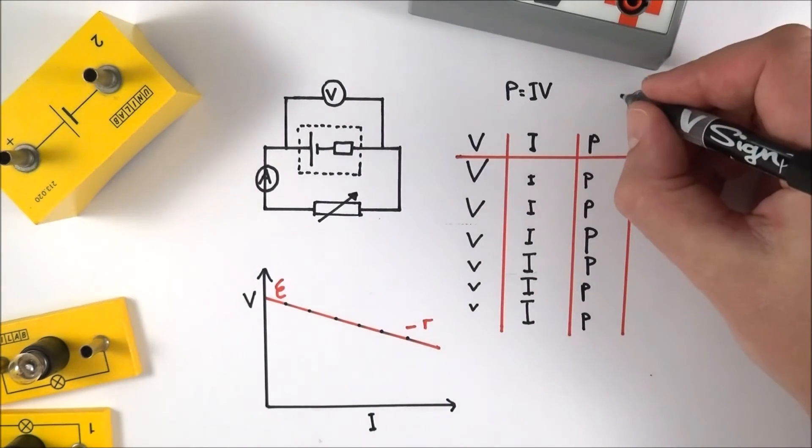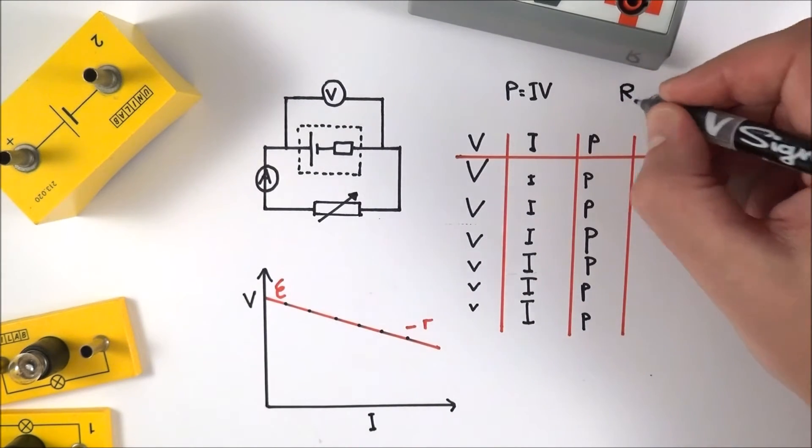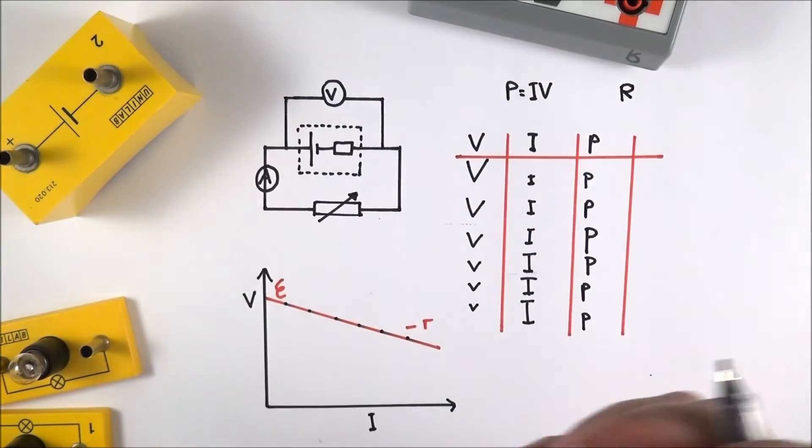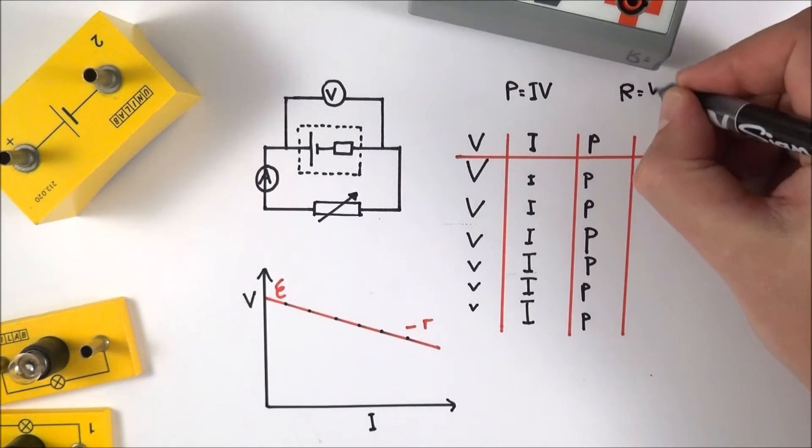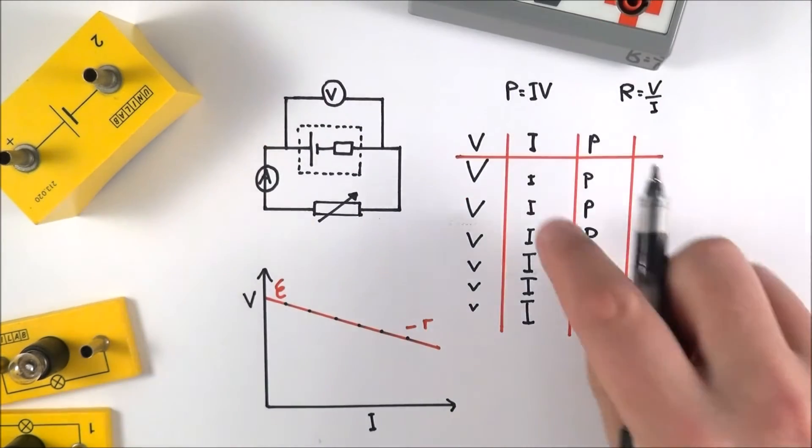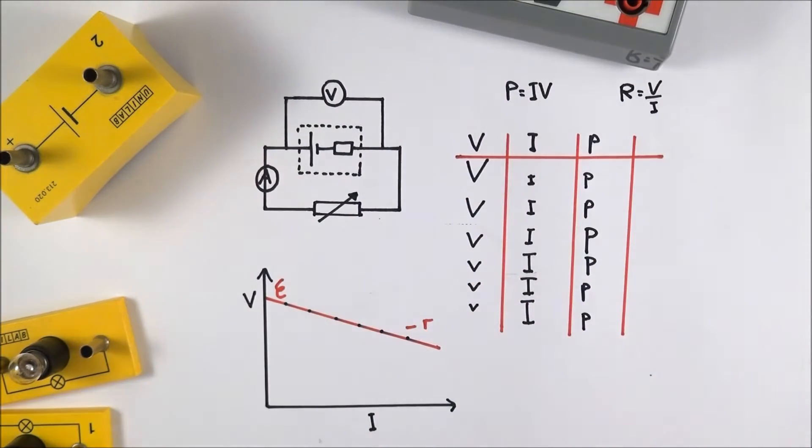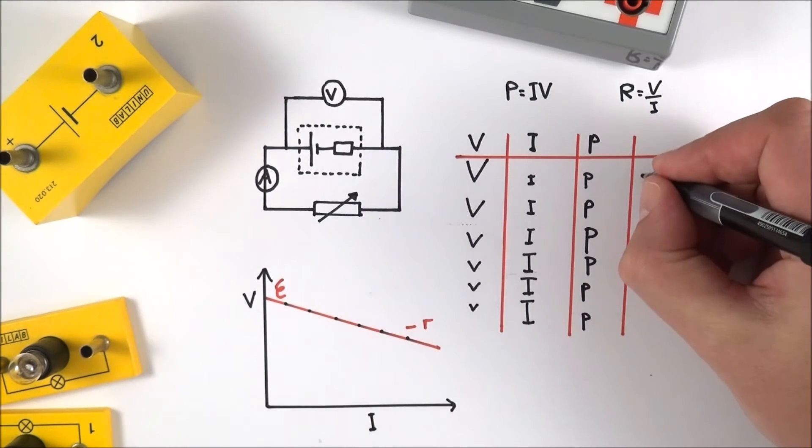We can also work out the resistance of the external part of that circuit. Remember that V equals IR, so R is going to be equal to V over I. You can record these values, and you'll find that at the start, we've got a small value of resistance.